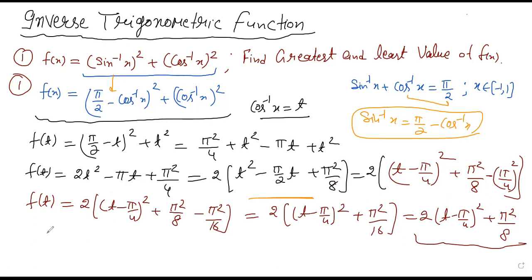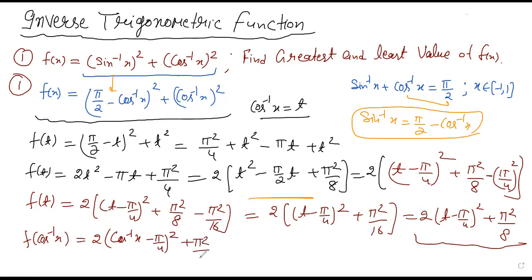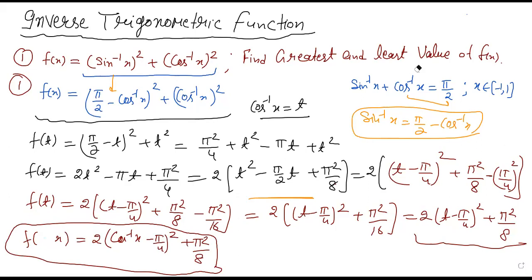We convert the function back in this form. Now we need to find the maximum value. Remember t = cos⁻¹x, so we write: f(x) = 2(cos⁻¹x − π/4)² + π²/8. Now we need to find the maximum and minimum value of this expression.